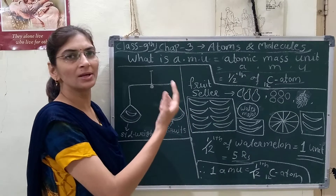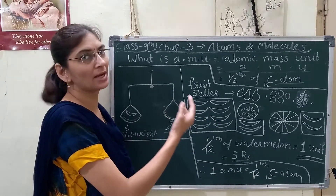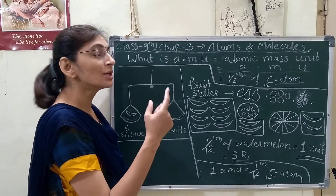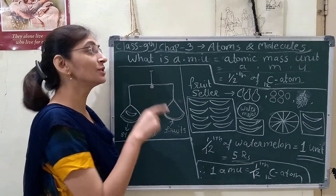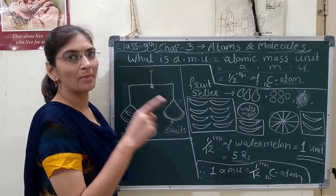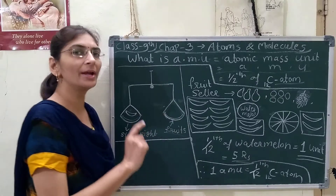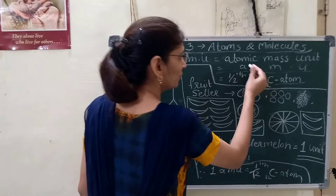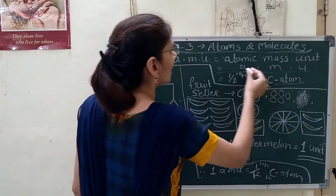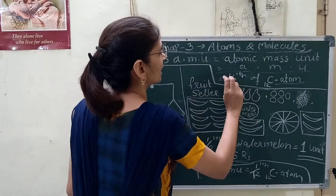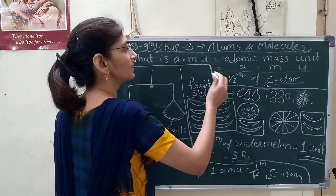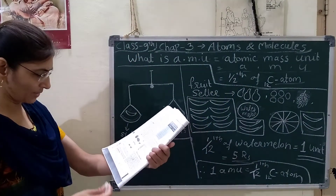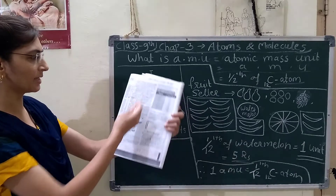Later on, according to IUPAC recommendation, it is written as 'u' — small u — that is unified mass of atom. So what is AMU, atomic mass unit, and how it is derived — we will see through one activity on page number 35 of your textbook.